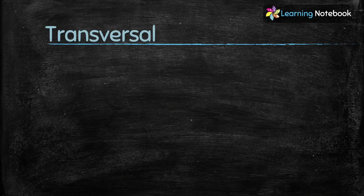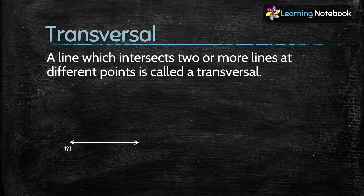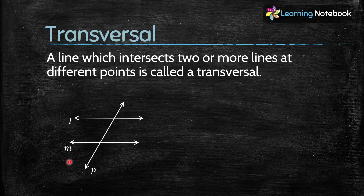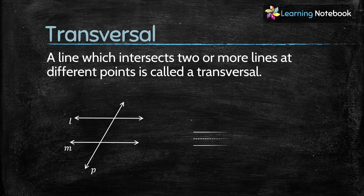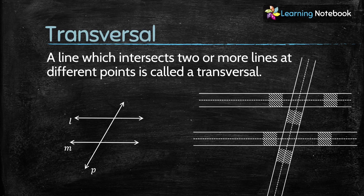First, let's understand what a transversal is. A line which intersects two or more lines at different points is called a transversal. Here, line P intersects line L and M at two different points, so line P is a transversal. The roads that cross each other are a real-life example of a transversal.